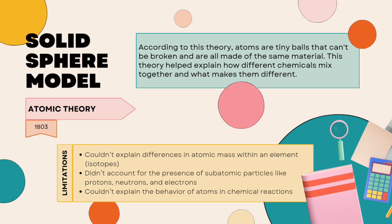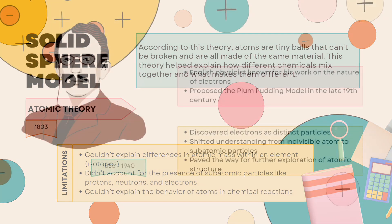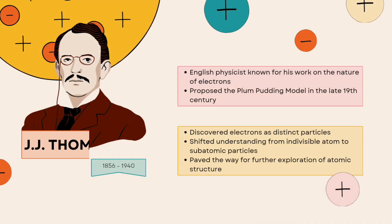According to the solid sphere model, atoms are tiny balls that can't be broken and are all made of the same material. This theory helped explain how different chemicals mix together and what makes them different. Limitations include: it couldn't explain differences in atomic mass within an element, didn't account for subatomic particles like protons, neutrons, and electrons, and couldn't explain the behavior of atoms in chemical reactions.